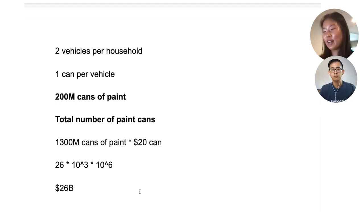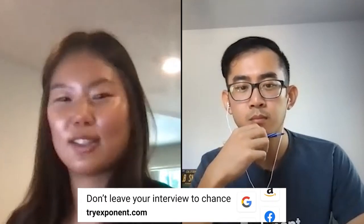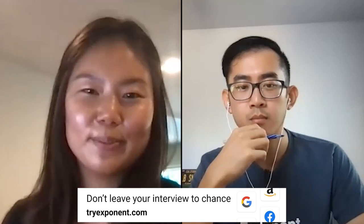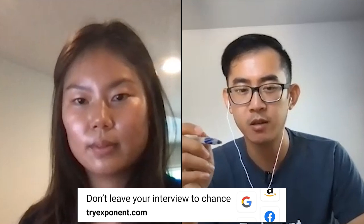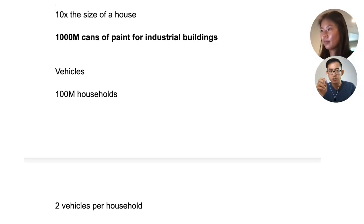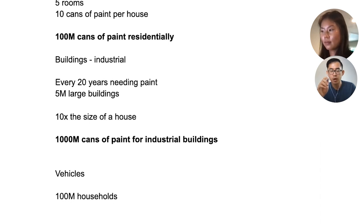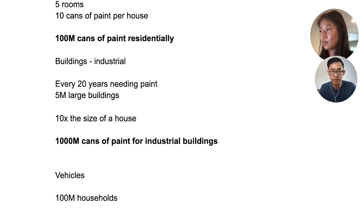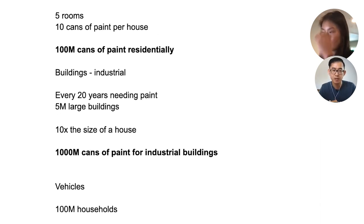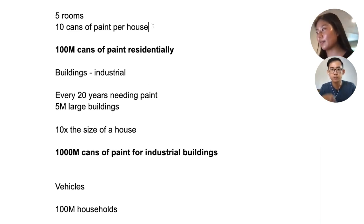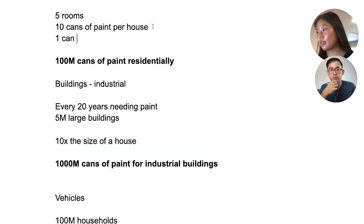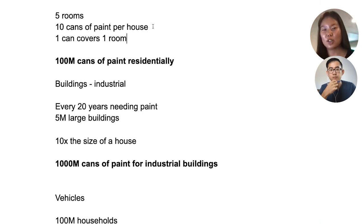I'll pause there in case you have questions on how I got here, and then give my thoughts on what this number means. Yeah, this makes sense broadly. Do you mind scrolling up? I'm looking at the top — it says approximately five rooms per house, is that 10 cans? That's covering all five rooms, so we're assuming one can covers the square footage for one room, and then you're also painting the exterior, so I'm approximating you just double the surface area.